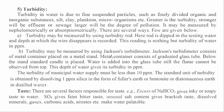Turbidity may also be measured using Jackson's Turbidimeter, which consists of a metal container placed on a metal stand with a graduated glass tube. Below the stand, a standard candle is placed. Water is added into the glass tube until the flame cannot be observed from the top. This depth of water gives its turbidity in ppm. The turbidity of municipal water supply must be less than 10 ppm. The standard unit of turbidity is obtained by dissolving 1 ppm silica in the form of fuller's earth, bentonite, or diatomaceous earth in distilled water.